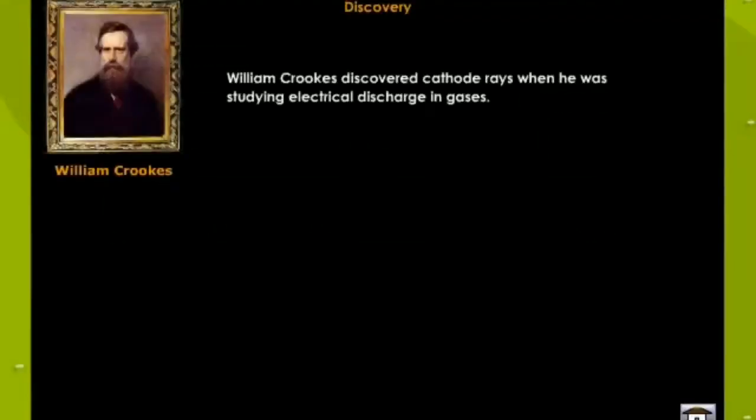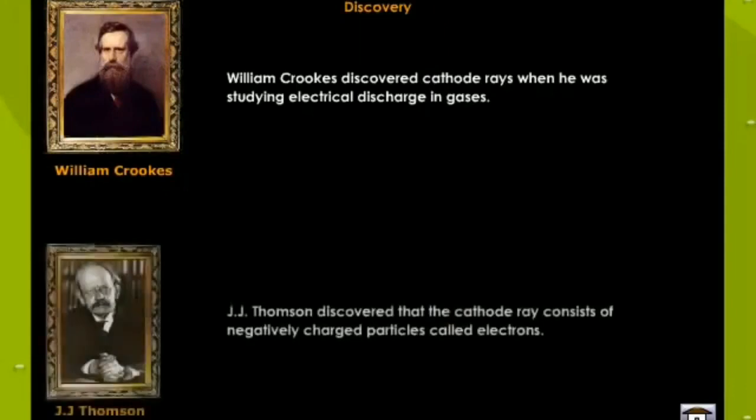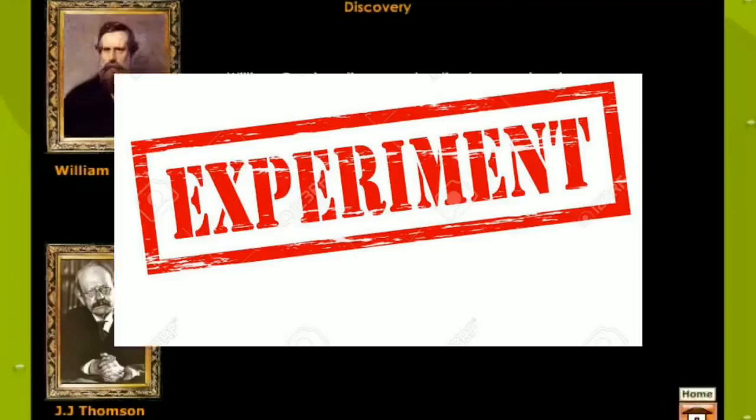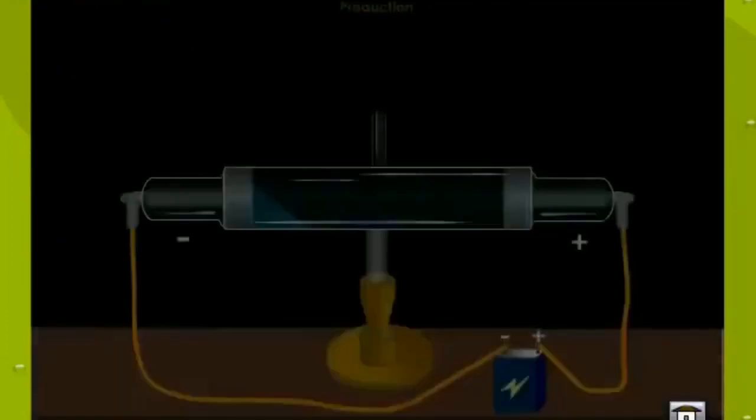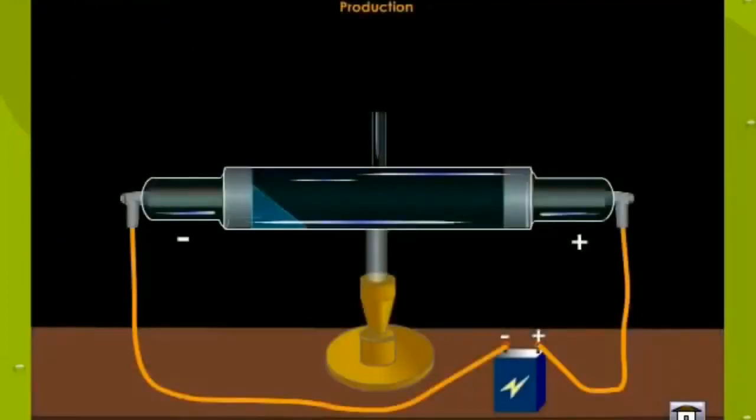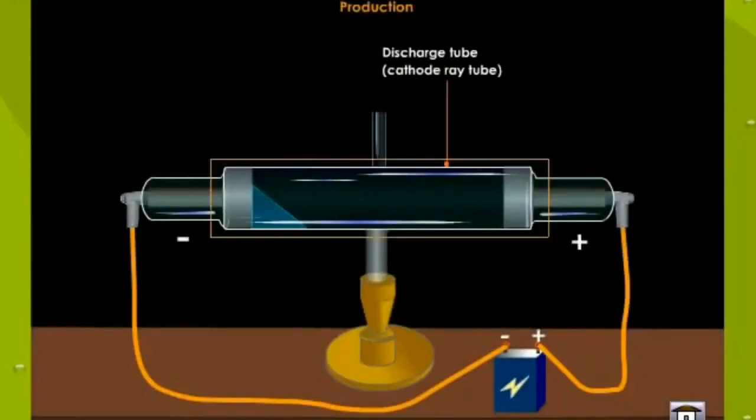Next topic is discovery of electrons. William Crookes, a British chemist, in the year 1879 discovered cathode rays when he was studying electrical discharging gases, whereas J.J. Thompson studied the properties of cathode rays. Now, according to William Crookes, if you see the diagram, the experiment performed here...